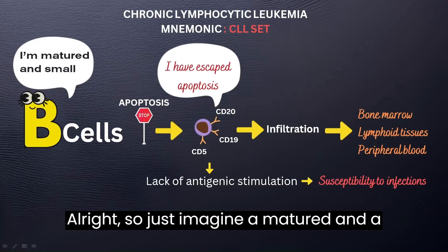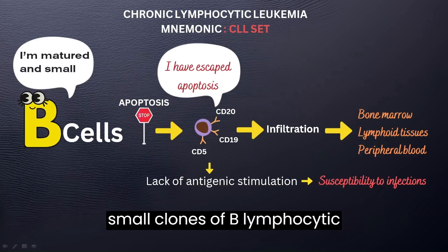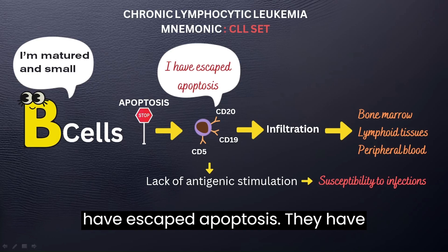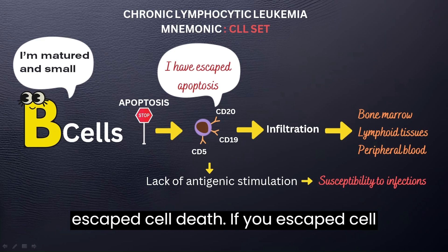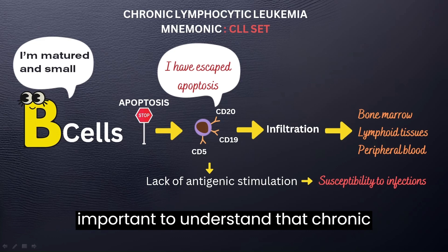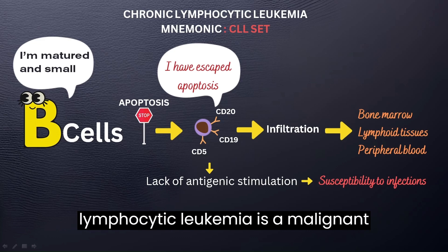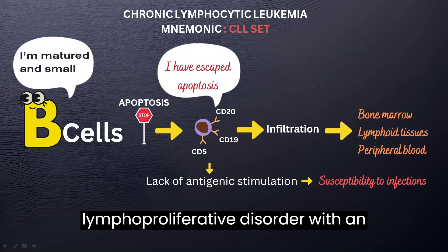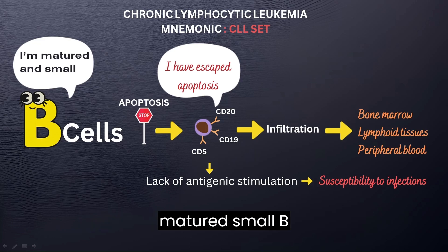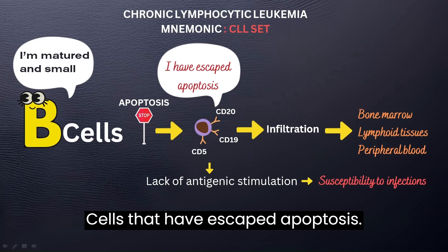So just imagine matured and small clones of B lymphocytic cells. Why are they matured? Because they have escaped apoptosis — they have escaped cell death. If you escape cell death, then you must be matured. So it's important to understand that chronic lymphocytic leukemia is a malignant lymphoproliferative disorder with an abnormal clonal expansion of these matured small B cells that have escaped apoptosis.